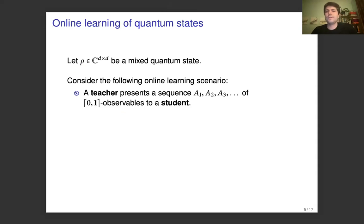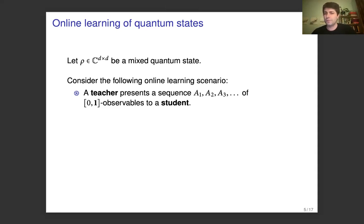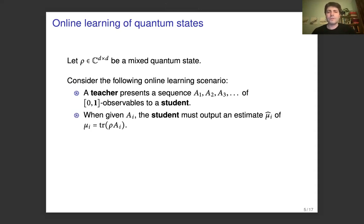Here we have the algorithm for online learning of quantum states. Suppose that rho is a mixed quantum state as before. There are two parties: a teacher and a student. The teacher will present a sequence of observables a1, a2, a3, and so on to the student. Given one of these observables, the student must output an estimate of trace(rho * ai), which we will call mu_i, and the student will output mu_i_hat as his estimate.